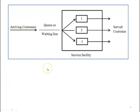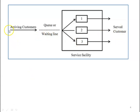This is the general layout of a queuing system. We have the service facility, and customers — which may be people or jobs — are arriving and forming a queue or waiting line. They are directed to a particular service facility; here we have three facilities. After completion of service, the served customer leaves. For example, a job enters, waits in the queue, goes to a particular lathe, undergoes an operation, and the finished product leaves the system.